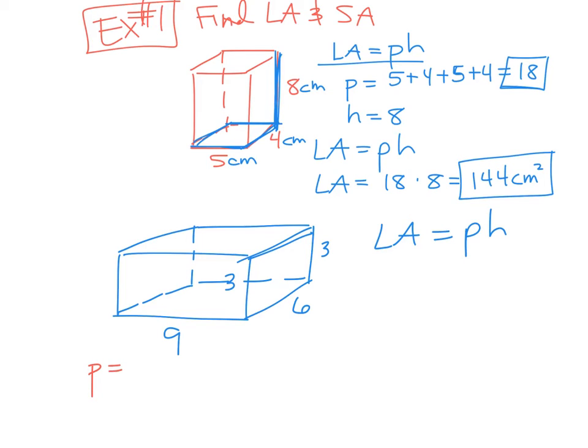Lateral area is perimeter of the base times the height. So let's find P. What is the perimeter of your base right now? 9 and 6. So it's 9 plus 6 plus 9 plus 6. So that would be 15 and 15, which is 30. So P is 30.